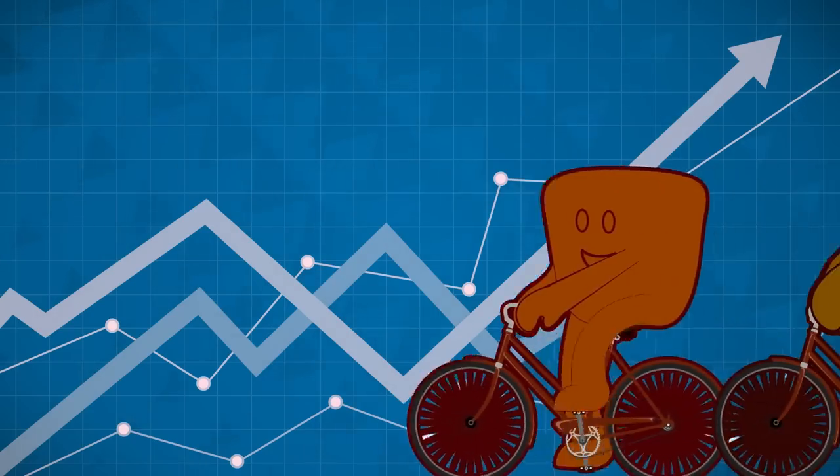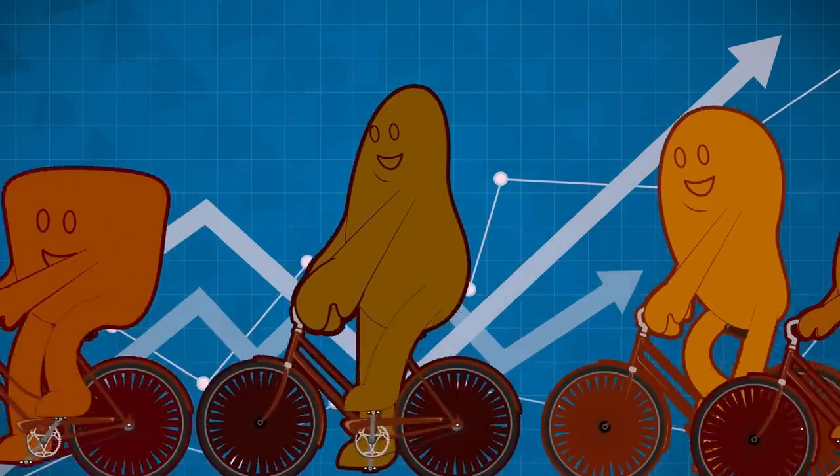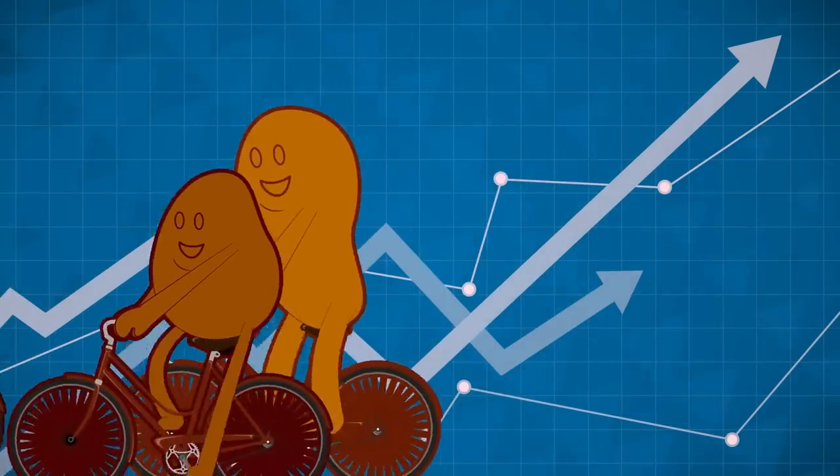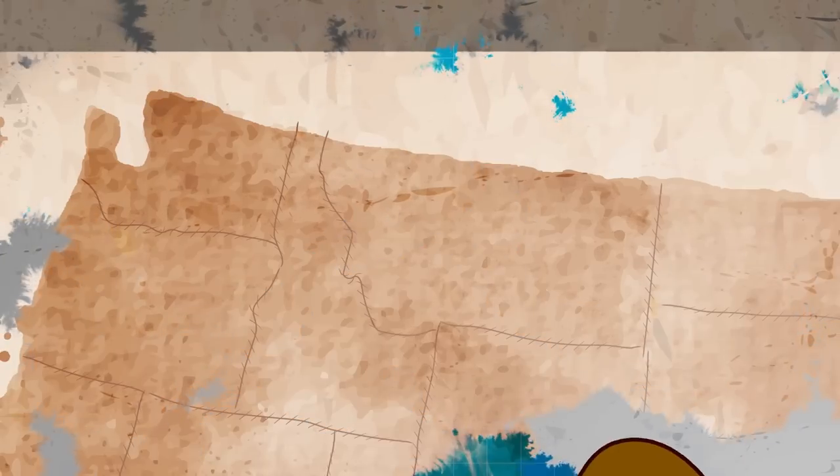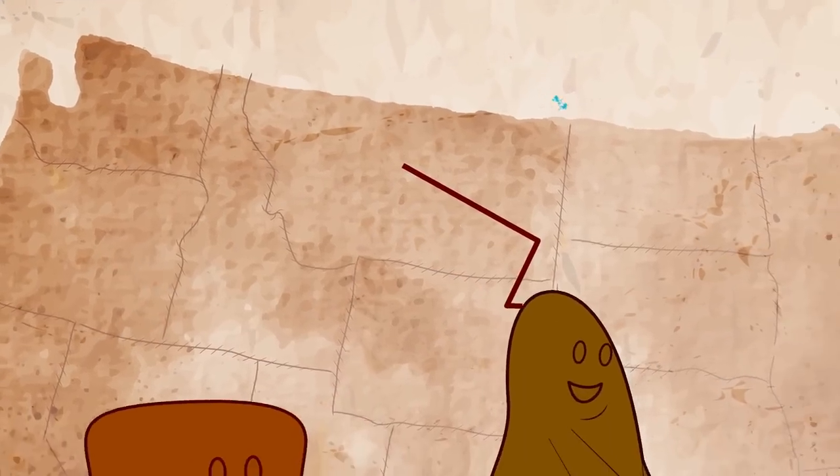In 1896, the US Army conducted an experiment to see if bikes could replace horses. They put together an all African American infantry unit, called Buffalo Soldiers.